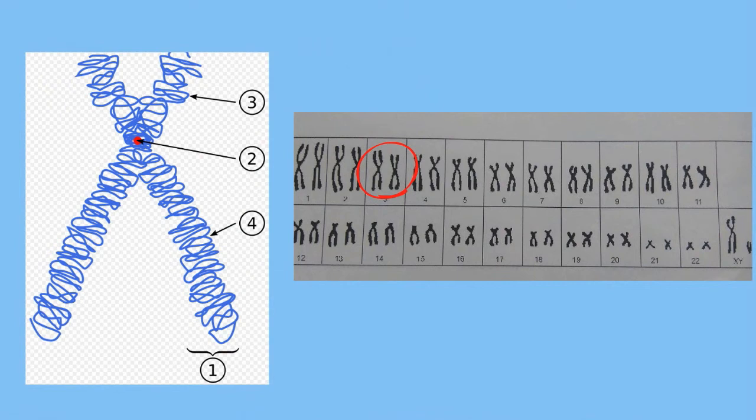Humans have 23 pairs of these homologous chromosomes for 46 total. Other organisms have different numbers and combinations.